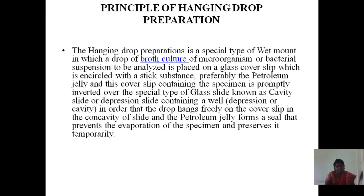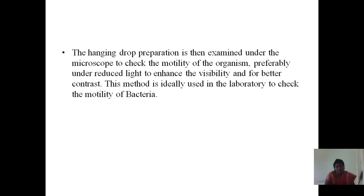The principle of hanging drop preparation: it is a special type of wet mount in which a drop of broth culture of a microorganism or bacterial suspension is placed on a glass coverslip, which is encircled with a sticky substance, preferably petroleum jelly. This coverslip containing the specimen is then inverted over a special type of glass slide known as a cavity slide or depression slide, containing a well or concavity so that the drop hangs freely. The petroleum jelly forms a seal that prevents evaporation of the specimen and preserves it temporarily. The preparation is examined under the microscope to check the motility of the organism, preferably under reduced light to enhance visibility and provide better contrast.